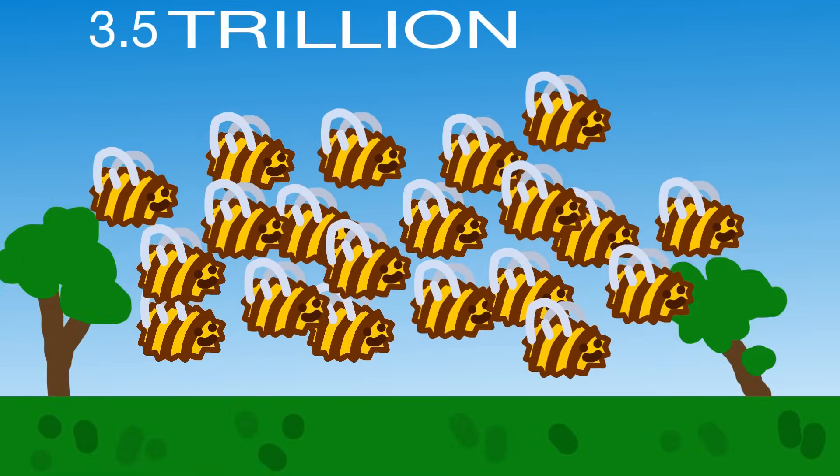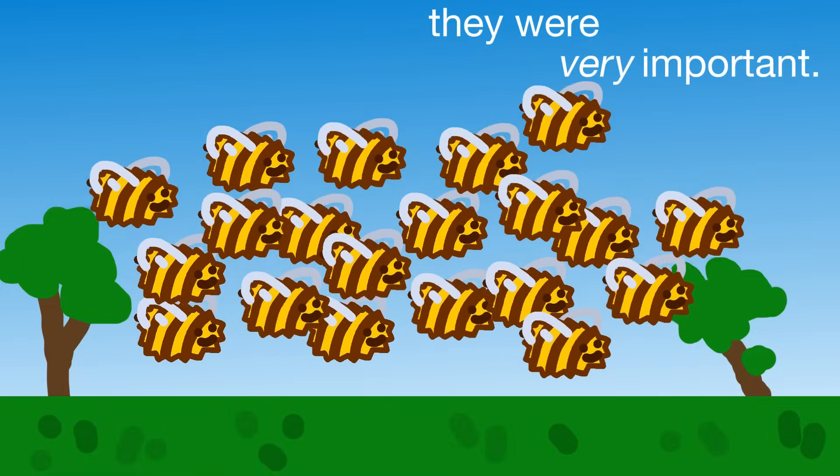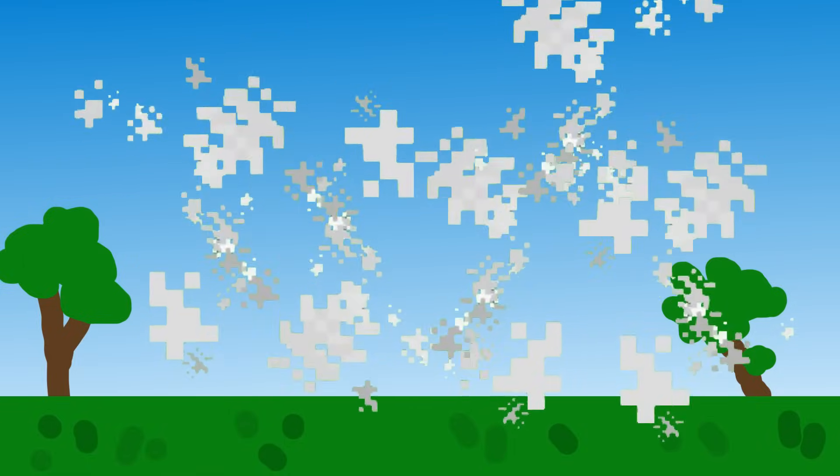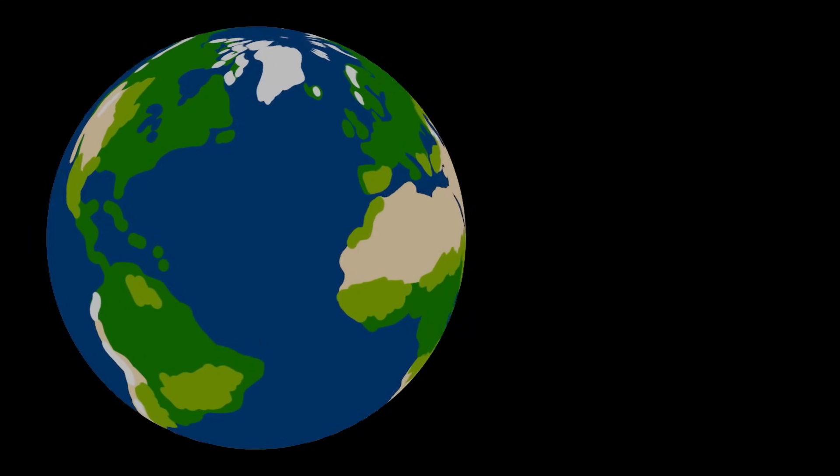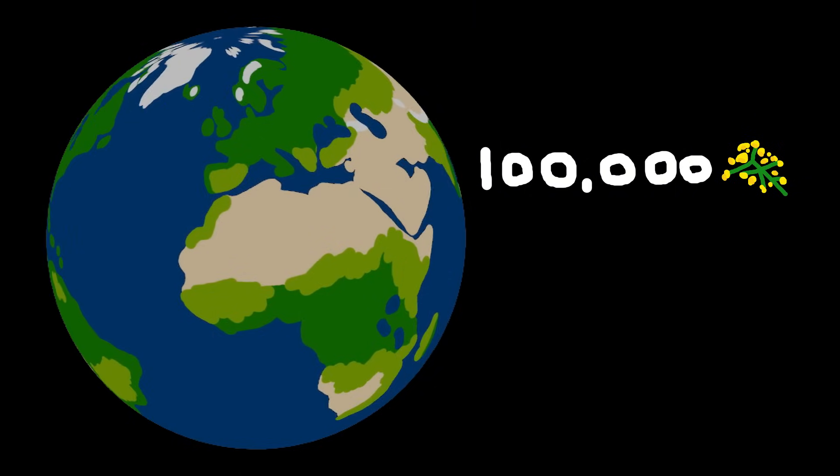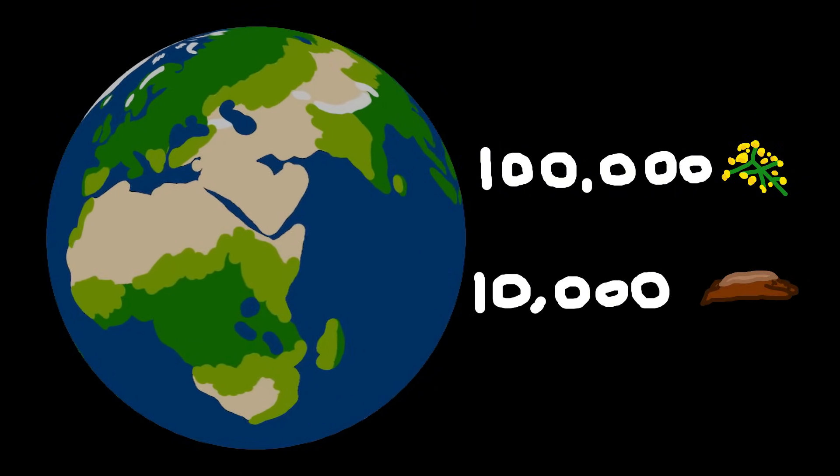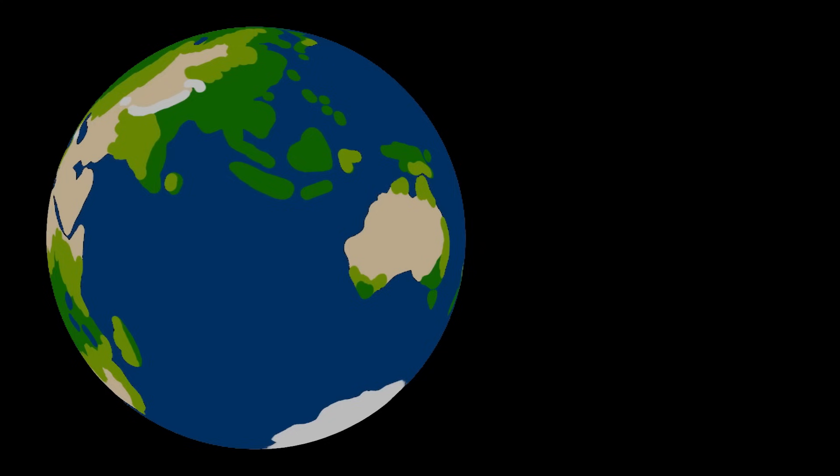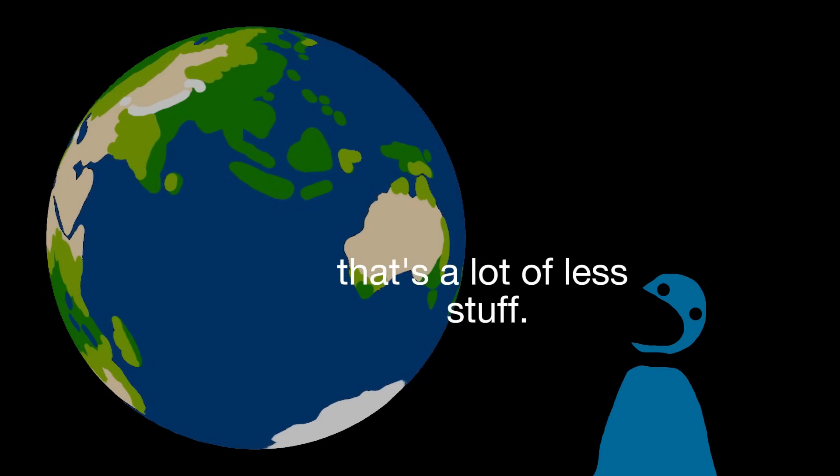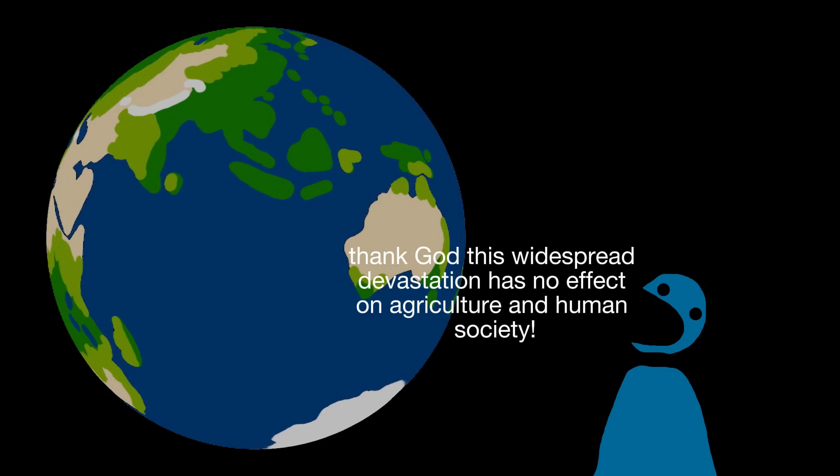Remember those 3.5 trillion bees? They were very important and we killed all of them. When we killed all of them, we decimated the food chain they are part of. Over the next few decades, 100,000 plant and 10,000 animal species will be threatened with extinction due to less bees causing less other stuff. Wow. That's a lot of less stuff. Thank god this widespread devastation has no effect on agriculture and human society.